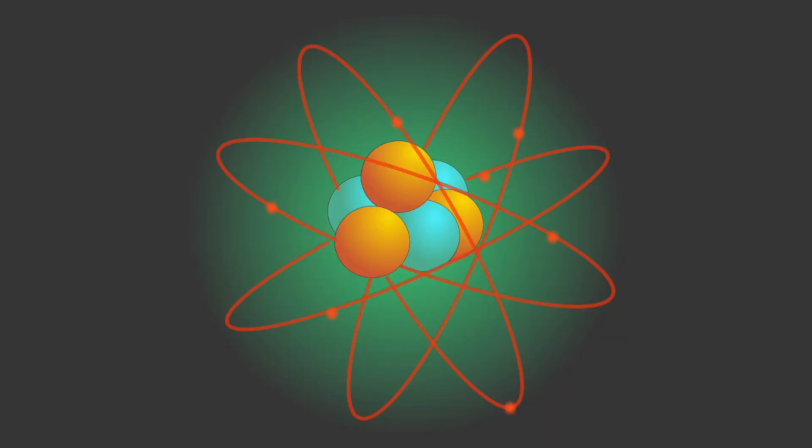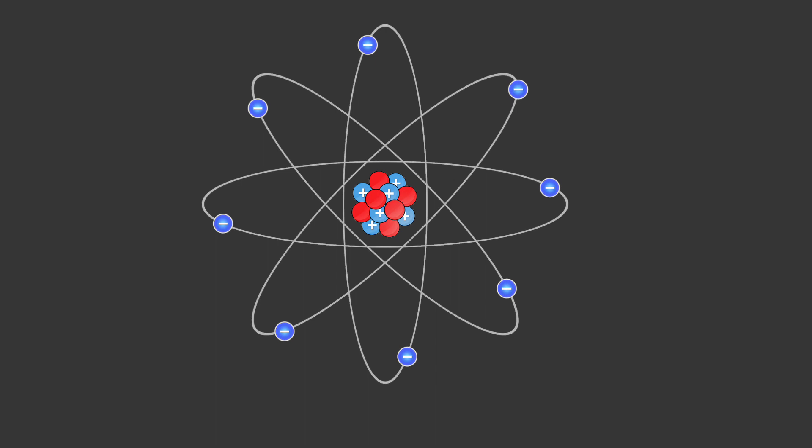Protons. Protons are positively charged particles found in the nucleus of an atom. They have a relative mass of approximately one atomic mass unit (u) and are responsible for the positive charge of the nucleus. The number of protons in an atom determines its atomic number and defines the element's identity.